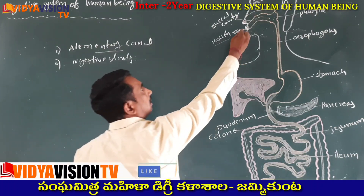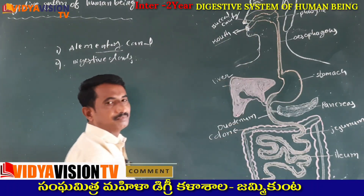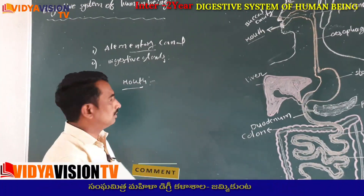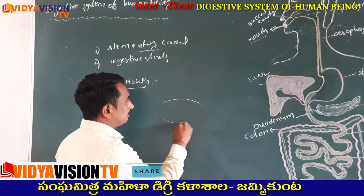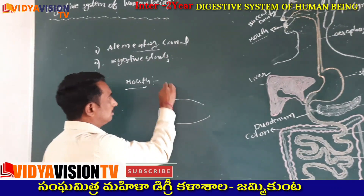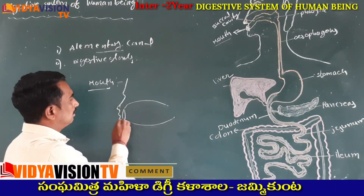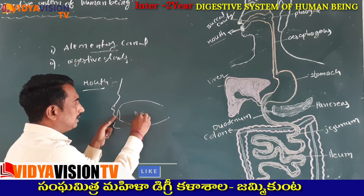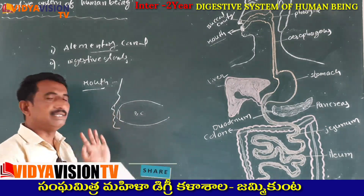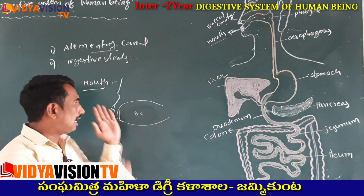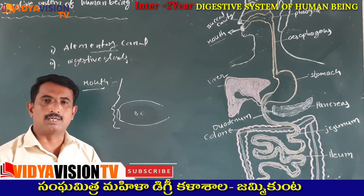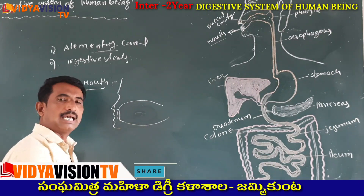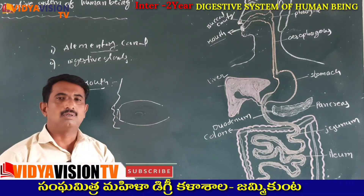Now we will discuss clearly about the mouth. The first part of the alimentary canal is called the mouth. The mouth opens into the buccal cavity, also known as the oral cavity. The mouth is guarded by the upper lip and the lower lip.